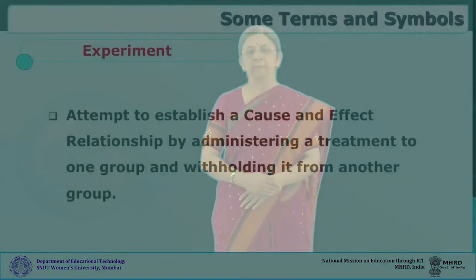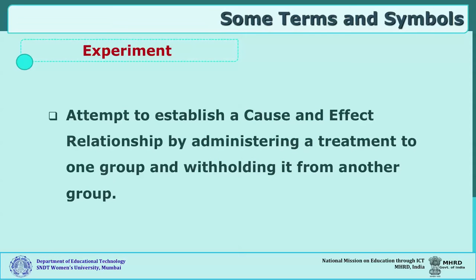The third type of method is known as the experimental method. In this experimental method, the researcher is interested in finding out what will happen in the future if one variable is used to affect another variable. It is an attempt to establish a cause-and-effect relationship by administering a treatment to one group and withholding it from the other group.